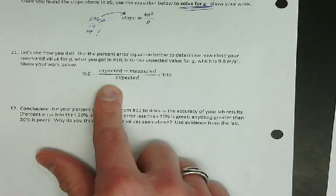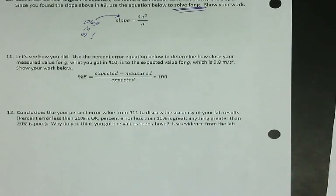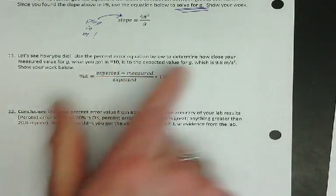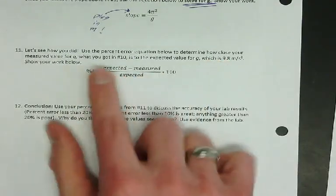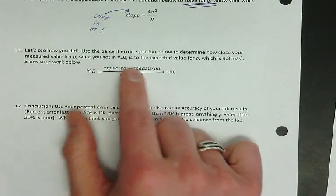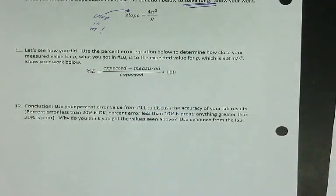Once you've done that, then you're going to go down here to 11. You're going to solve for your percent error. Your expected is 9.8. Your measured is what you got in 10. Then solve for your percent error.